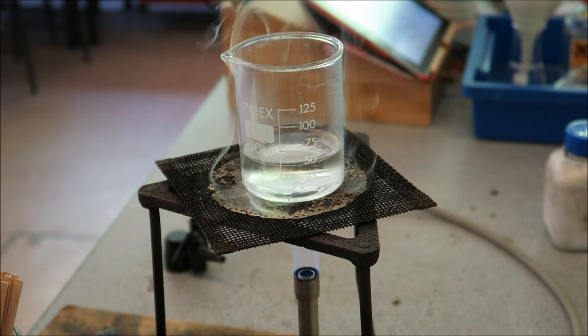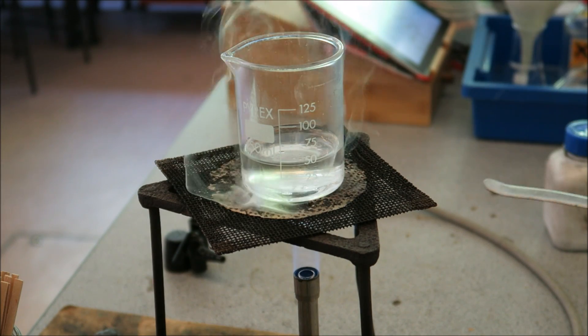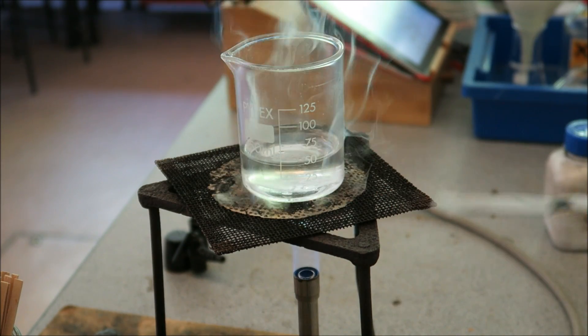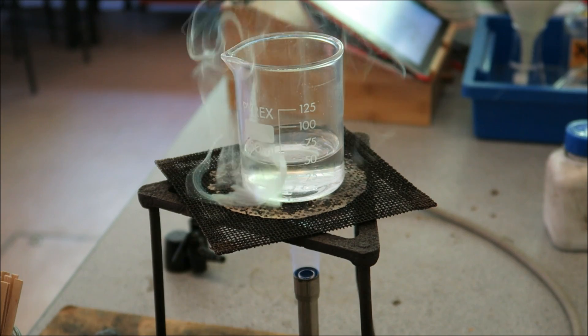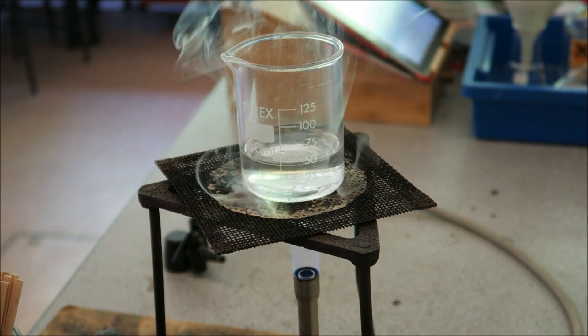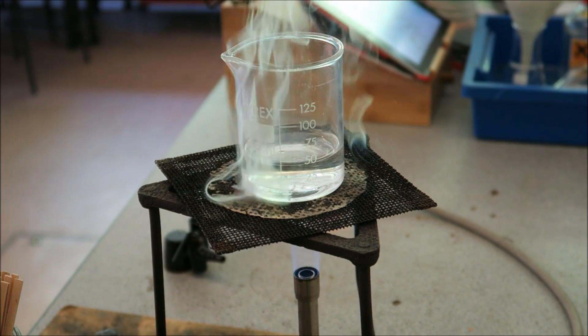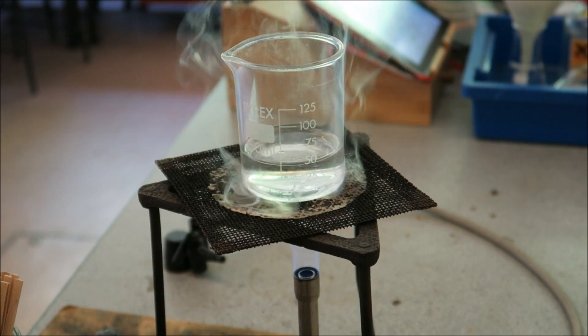Here I have a beaker which has sulfuric acid in it and I'm just heating it up. All this smoke you can see coming around the outside, that isn't sulfuric acid, that is just stuff burning on the gauze. And what I'm going to do is mix in some copper oxide, spatula by spatula, mixing it as I go and what I want you to watch is the color.